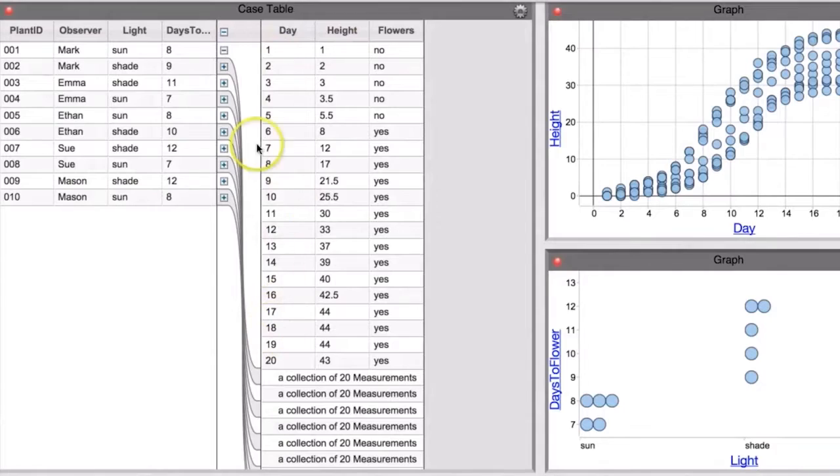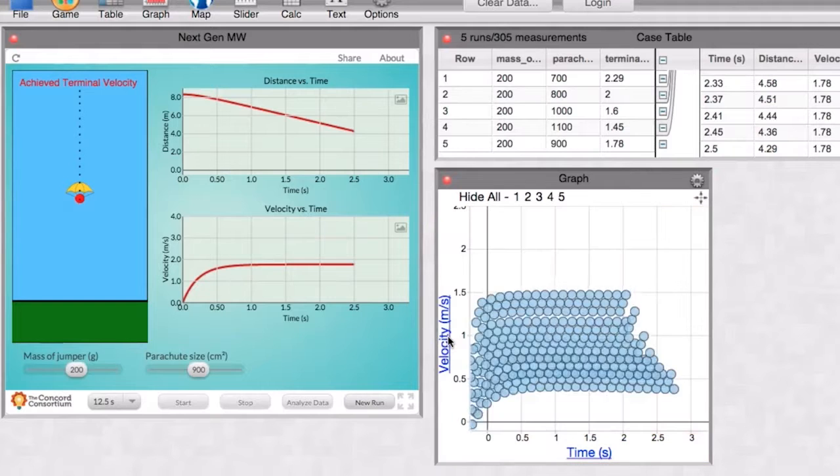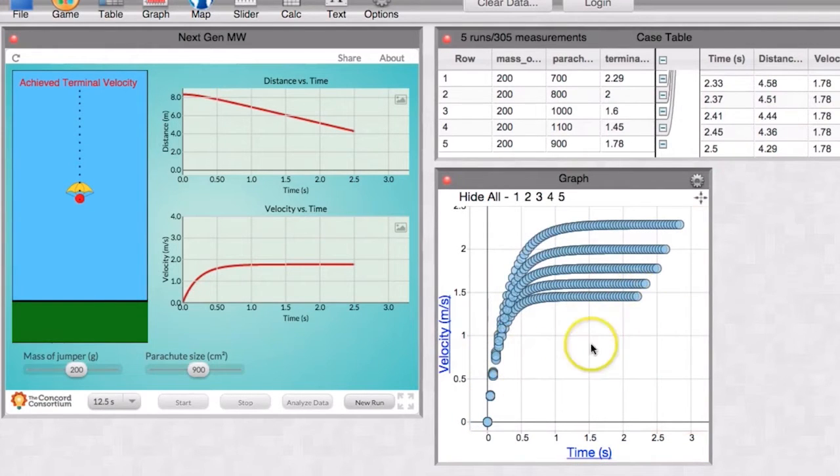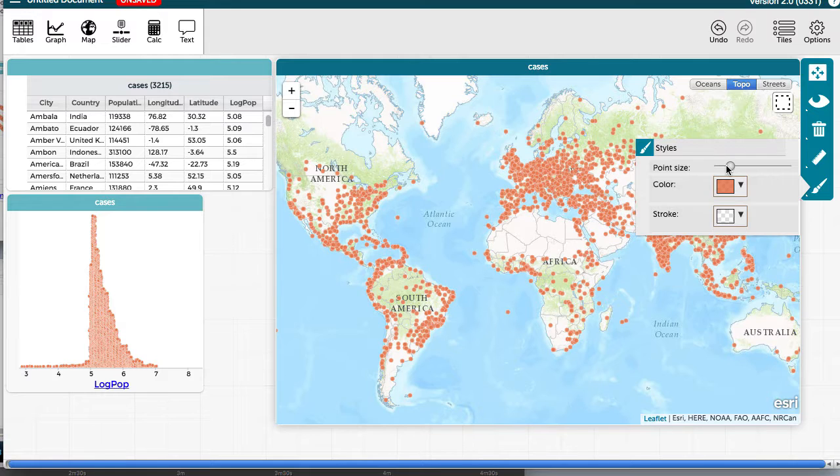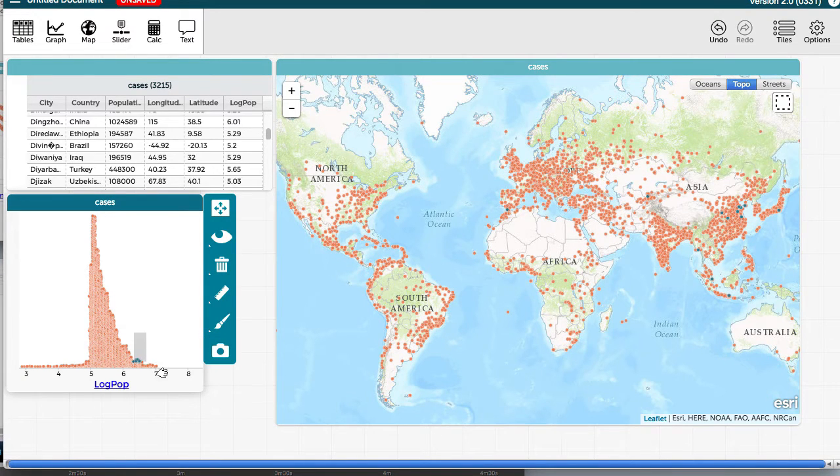Data are everywhere and data are going to be key to solving so many problems. So CODAP is about helping to bring that about as quickly and as meaningfully as possible.